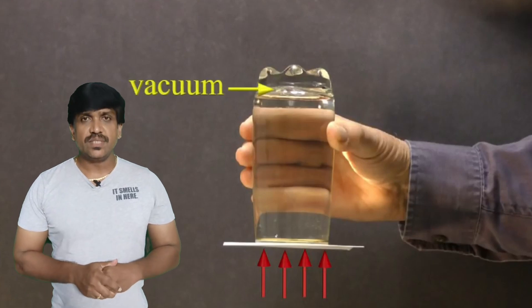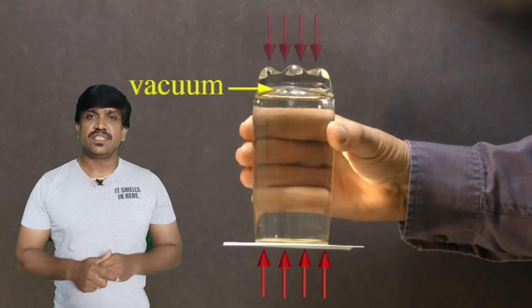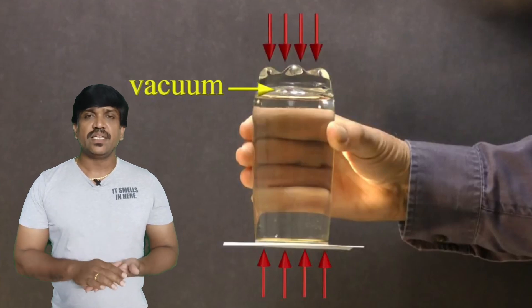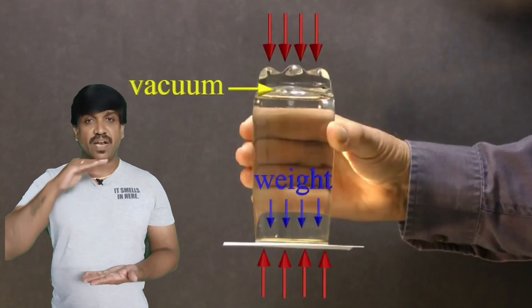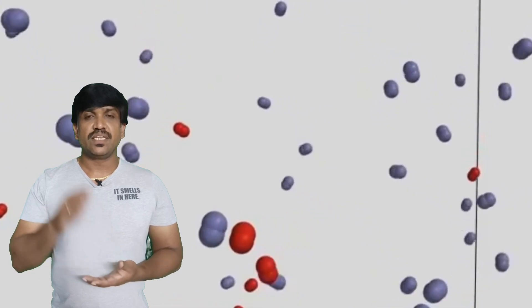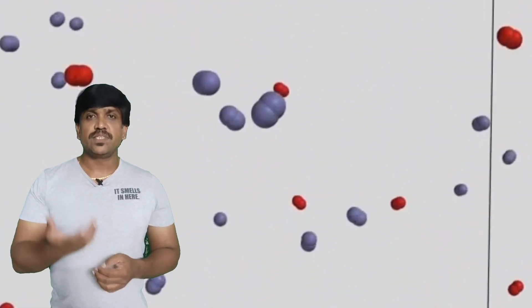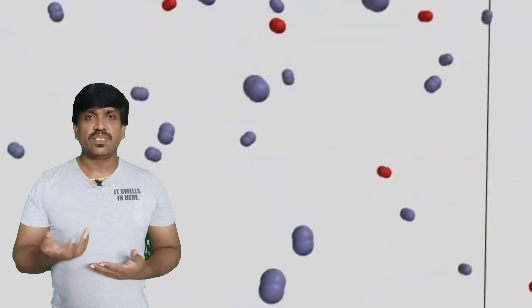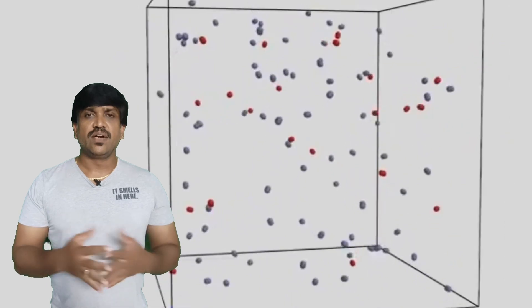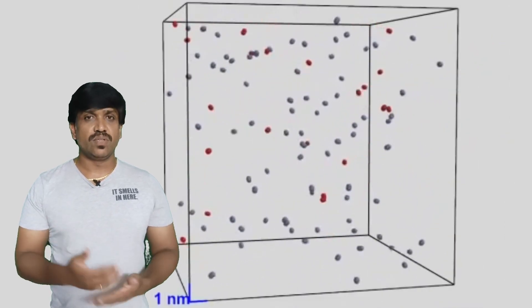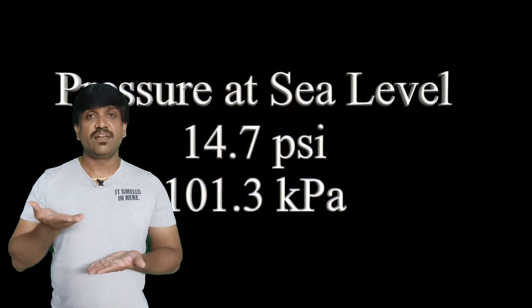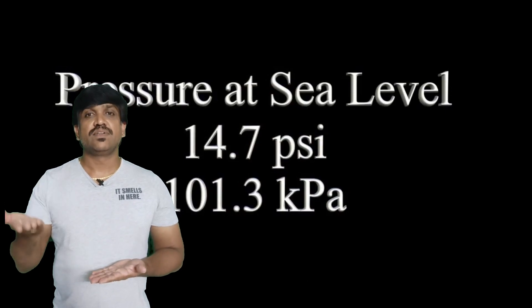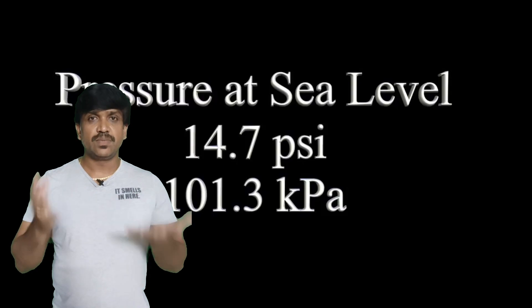At higher elevation areas, the air molecule pressure is about 715 to 725 mm of Hg — it is in this range. Suppose we are in the sea area or nearby, the pressure is in the 750, 755, 760 range. At an elevation of about 151 meters height, the pressure is in the 710 to 720 range — around 720 mm of Hg.